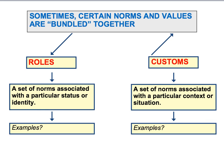Sometimes norms and values are bundled together and attached to particular roles or customs within society. A social role is the expected pattern of behaviour associated with a particular social status — for example, the set of rules defining how teachers should behave given their occupational status. Customs are the expected behaviours associated with a particular context or situation, which is perhaps clearest in formal situations such as weddings and funerals, where there are whole ranges of norms about dress and demeanour that people are expected to follow.